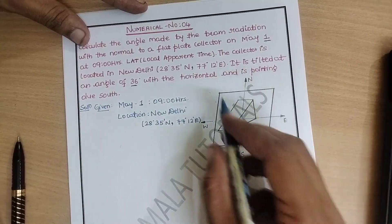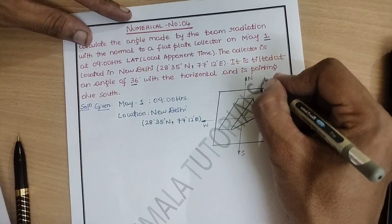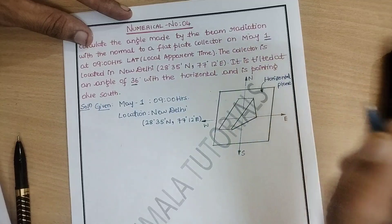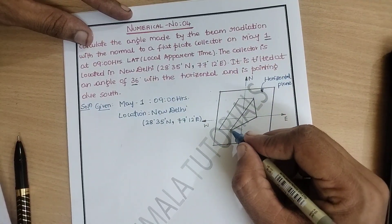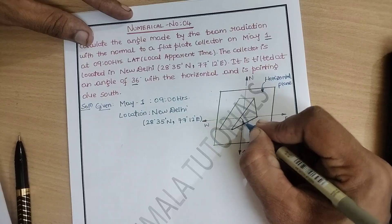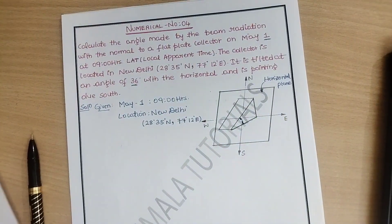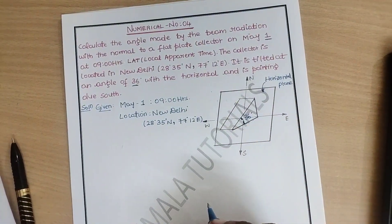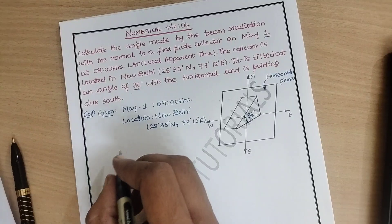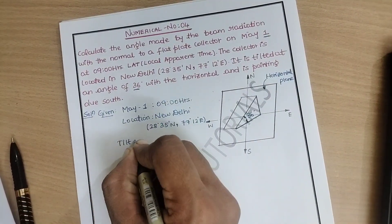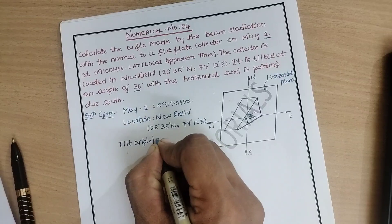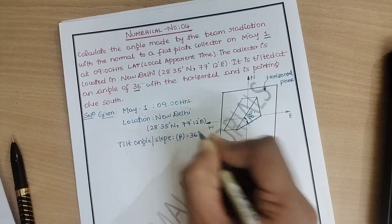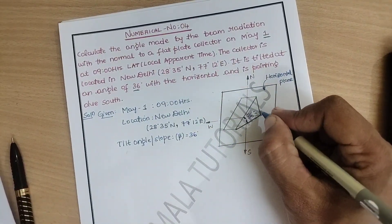This is the horizontal plane — the sketch is purely for your understanding. You can see that with respect to the horizontal there is a small inclination. This is how our flat plate collector will be placed, and the angle is 36 degrees. We call it the tilt angle, also called slope, represented as angle beta, which is equal to 36 degrees.